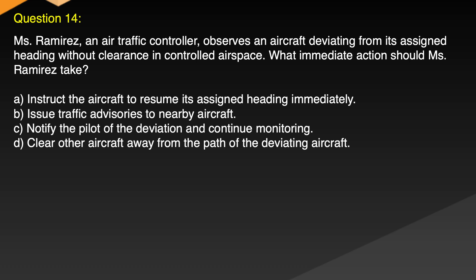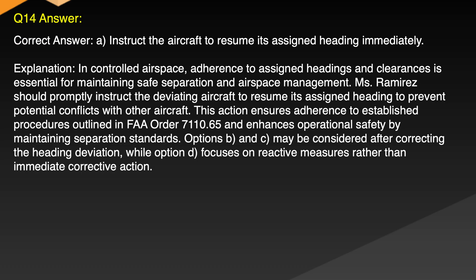Question 14. Emis Ramirez, an air traffic controller, observes an aircraft deviating from its assigned heading without clearance in controlled airspace. What immediate action should Emis Ramirez take? A. Instruct the aircraft to resume its assigned heading immediately. B. Issue traffic advisories to nearby aircraft. C. Notify the pilot of the deviation and continue monitoring. D. Clear aircraft away from the path of the deviating aircraft. Correct answer: A. Instruct the aircraft to resume its assigned heading immediately.